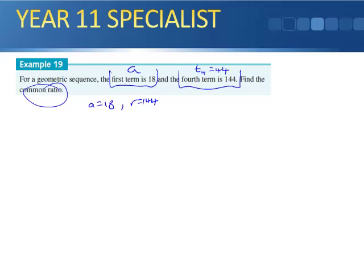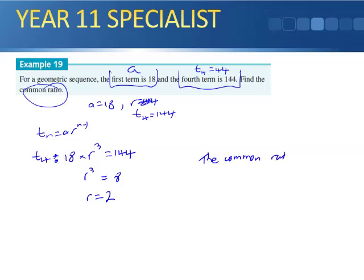We know T of 4 equals 144. So using the rule, T of N equals AR to the N minus 1, we can substitute T of 4, which gives us 18 times R. 4 minus 1 is 3, and we know that's going to equal 144. Divide by 18, we get R cubed equals 8, and therefore R equals 2. So the common ratio is 2.